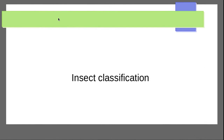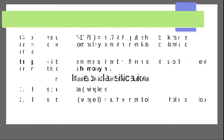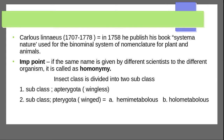Today we are covering insect classification. One of the key figures in insect classification is Carolus Linnaeus, 1707 to 1778. In 1758, he published his book Systema Naturae, using the binomial system of nomenclature for plant and animal classification. An important point: if the same name is given by different scientists to different organisms, it is called homonymy.